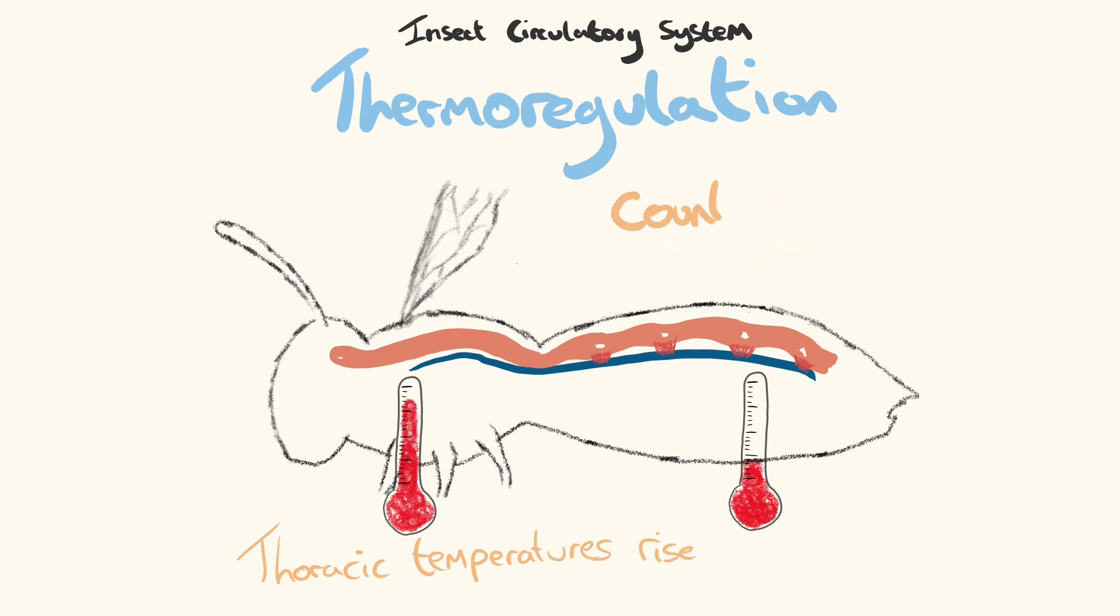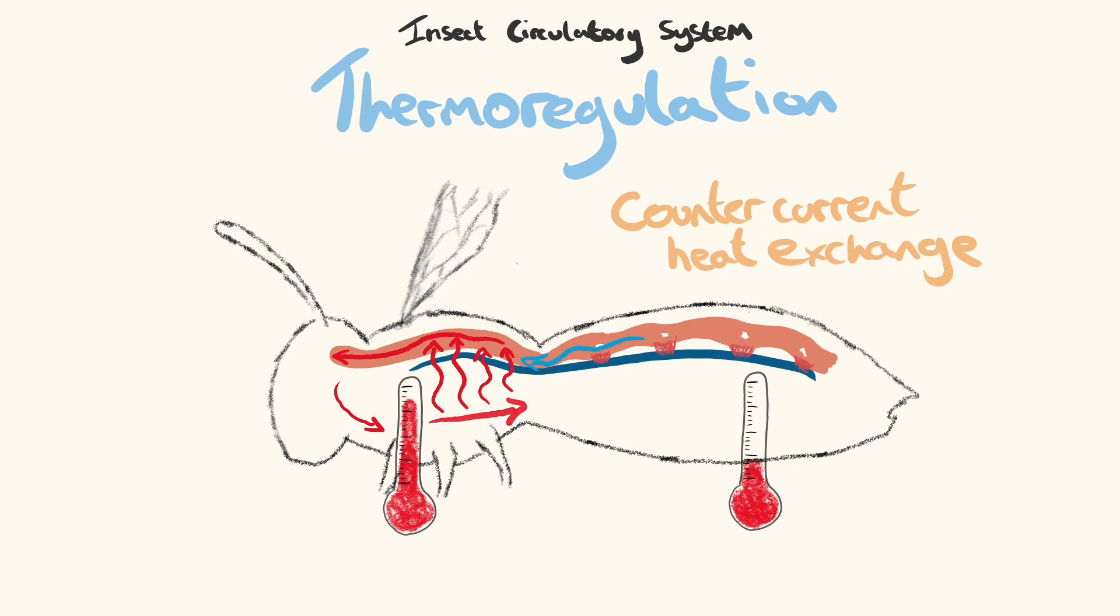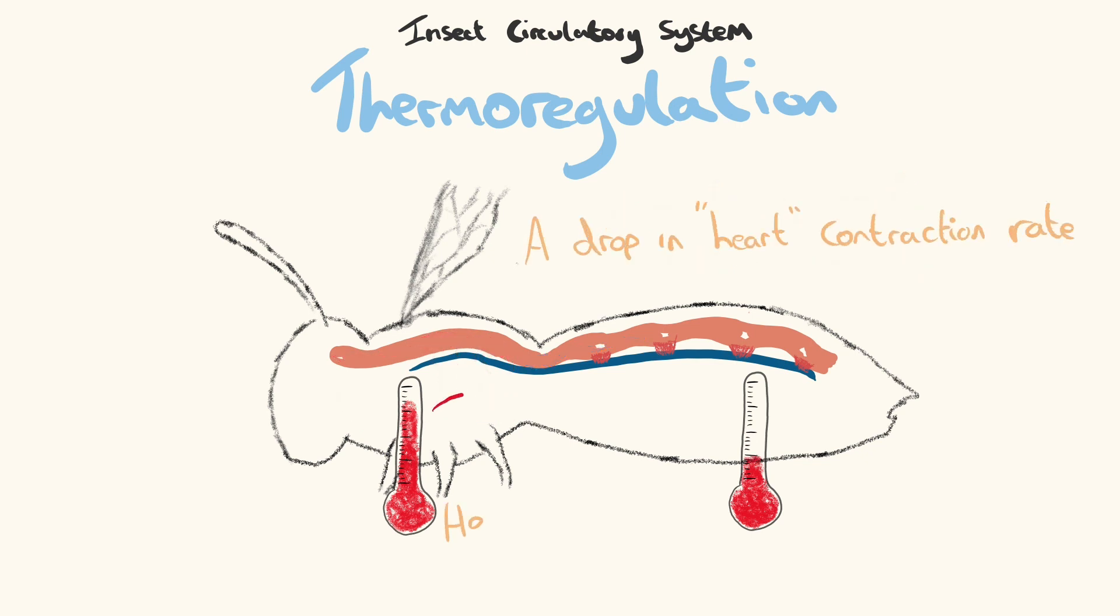This is done by using countercurrent flow where heated extracardiac haemolymph moving towards the posterior thorax transfers heat to cooler haemolymph in the dorsal vessel. This maintains higher temperatures in the thorax than the abdomen where vital organs are kept. When thoracic temperatures are too high, a drop in contraction rate from the heart will cause this heat to dissipate between the thorax and the abdomen.